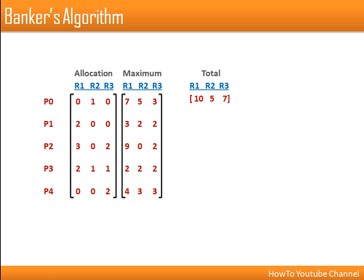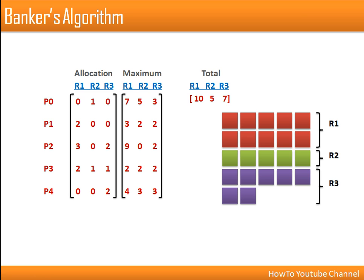We will see how Banker's Algorithm works with the help of a diagram. We are representing our resources with different colors: red represents R1 type of resources, green represents R2 type of resources, and violet represents R3 type of resources.